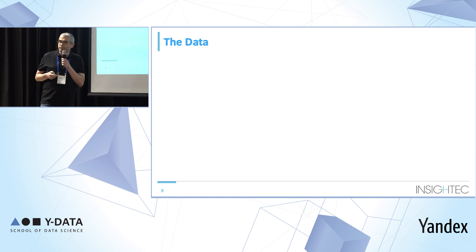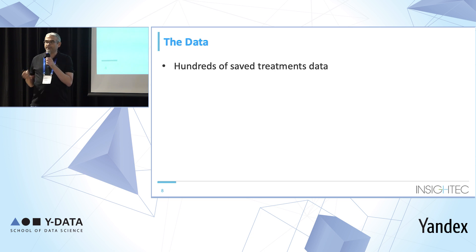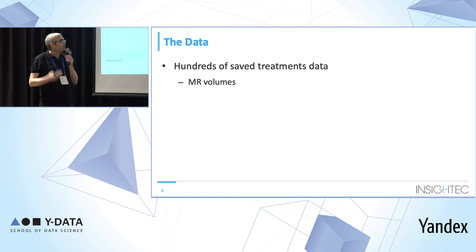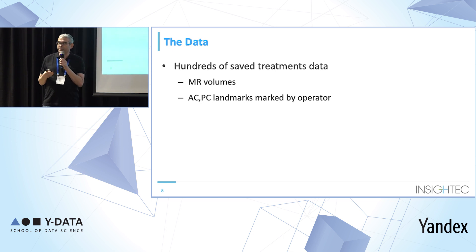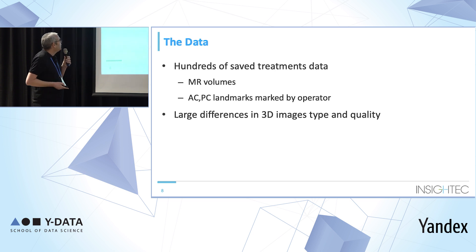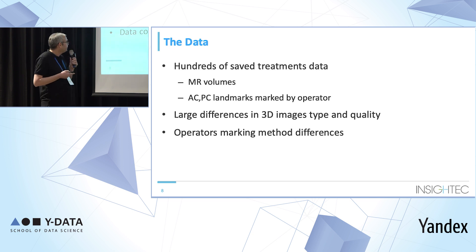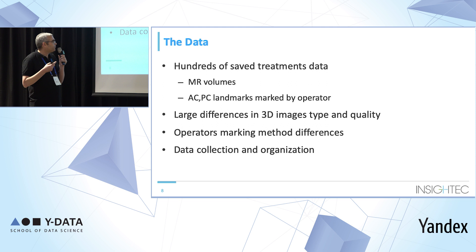We have saved data from several hundred previous treatments. For each treatment, we have the MR volumes — I use the axial slices and the sagittal slices. For each treatment we also have the landmarks that the user marked, so we have the labels. As shown, there is a large difference between treatments both in image type and quality, and also in the way the markers were assigned. There was also some work on collecting the data, as it was not well organized for an ML project.